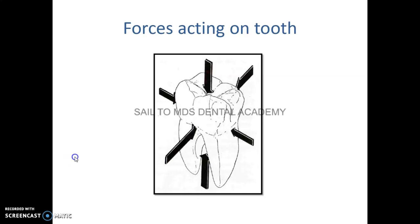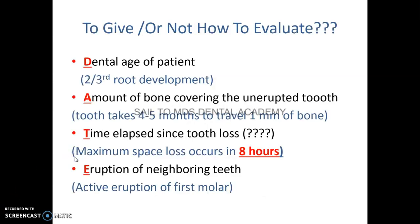To decide whether to give a space maintainer or not, remember the shortcut 'DATE.' The first factor is the Dental Age of the patient. As you know from the Nolla stage, when two-thirds of root development occurs, the tooth will erupt. Also consider the amount of bone covering the unerupted tooth — a tooth takes at least four to five months to travel one millimeter of bone.